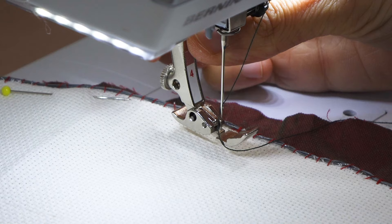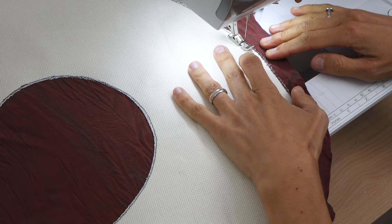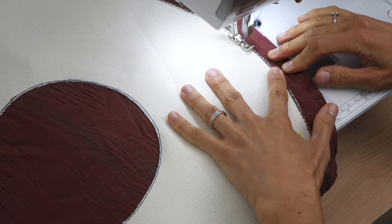To be able to stitch as close as possible to the wire, I will take out the normal foot of my machine and place a narrow one instead. This presser foot is also used to insert invisible zippers.